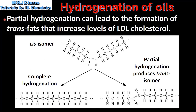Partial hydrogenation can lead to the formation of trans fats that increase levels of LDL cholesterol. Here we can see the hydrogenation of a cis isomer. Complete hydrogenation produces molecules with carbon to carbon single bonds, while partial hydrogenation produces the trans isomer. These trans isomers are known as trans fats.